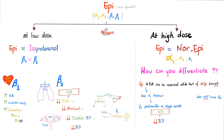Epinephrine, on the other hand, acts on both alpha and beta as an equal agonist, and beta 2 did not leave the chat — beta 2 is here. Epinephrine is dose-dependent. At low dose, it acts as if it's isoproterenol — a beta 1 and beta 2 agonist equally. At high dose, epinephrine acts as if it's norepinephrine — alpha 1 dominant, with some beta 1, and beta 2 has left the chat.